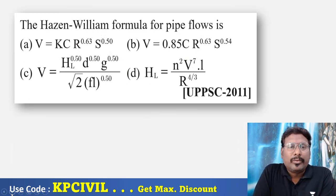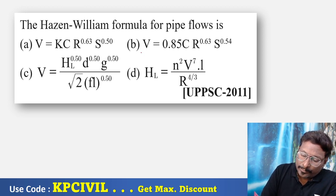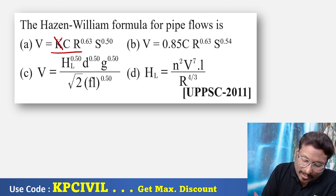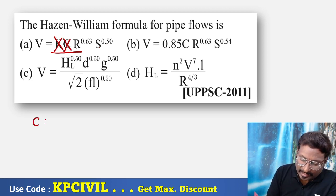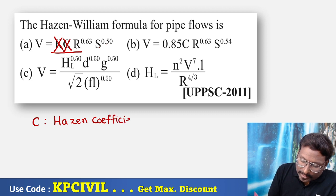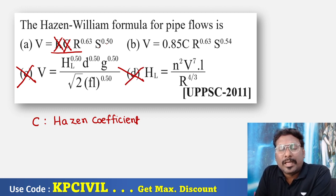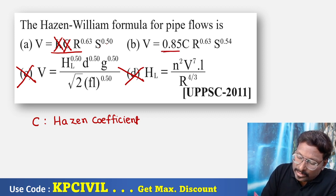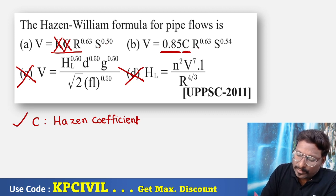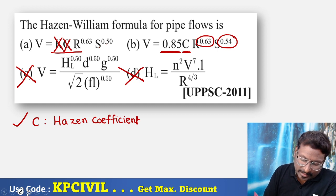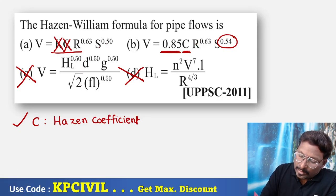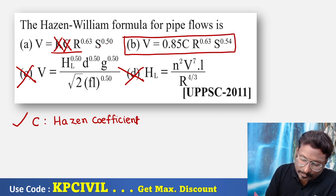The Hazen-Williams formula for pipe flow velocity: V = K·C·R^0.63·S^0.54, where K is a constant and C is the Hazen-Williams coefficient — only one constant. Checking the options: Option A is wrong. Options C and D provide no constant. So Option B is correct: V = 0.85·C·R^0.63·S^0.54. C is the Hazen-Williams coefficient, R^0.63·S^0.54 — this is correct.